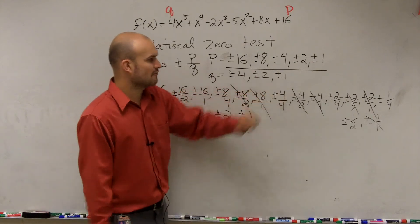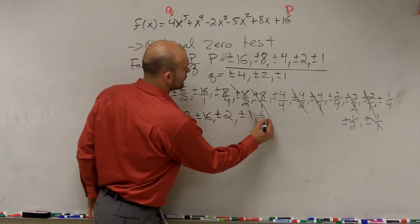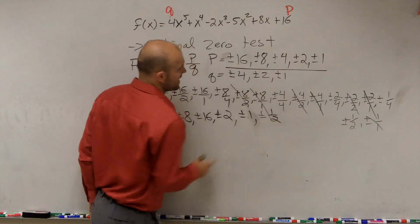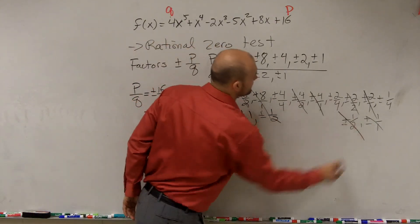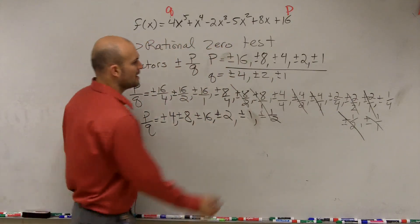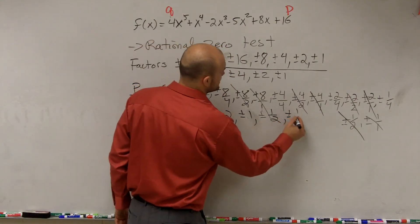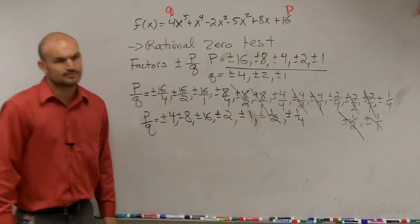Now let's go over to our fractions. So we have plus or minus 2 over 4, which is 1 half. Do we have another 1 half? Yeah, we have 1 half right here. And then we have plus or minus 1 over 4.